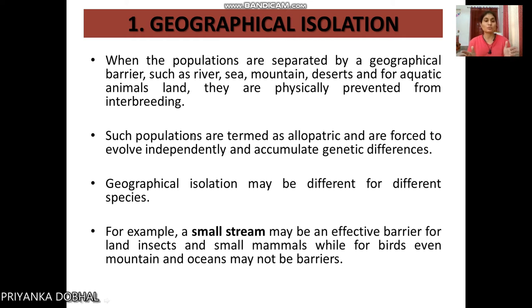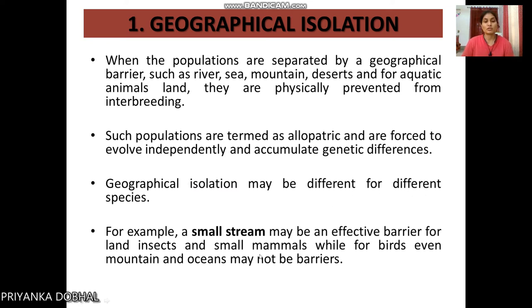So these species are geographically isolated and become different over time. This geographical isolation leads to allopatric speciation. A small stream can serve as an effective barrier for land insects and mammals, but it has no effect on birds.